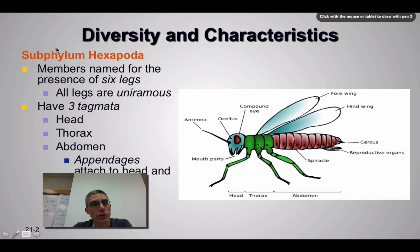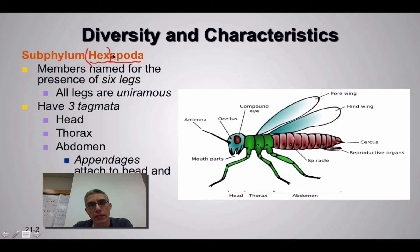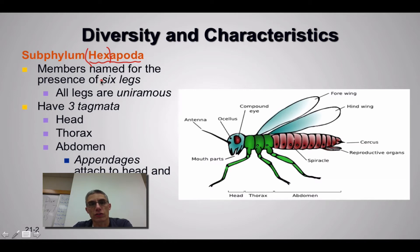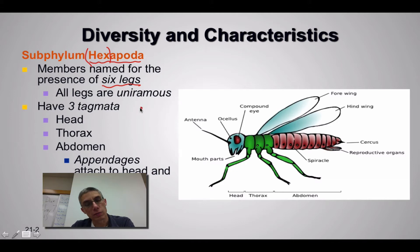Looking at our first slide, we have the subphylum Hexapoda — animals that have six legs, making them invertebrates. The prefix 'hex' means six. This is a subphylum of phylum Arthropoda, so we're still looking at animals that tend to have a significant exoskeleton. The members are named for the presence of six legs, compared to arachnids which had eight legs, and crustaceans which had a large number of legs — the crayfish, for example, had five pairs of walking legs plus various other appendages.